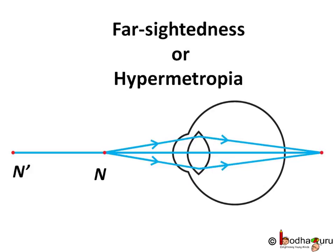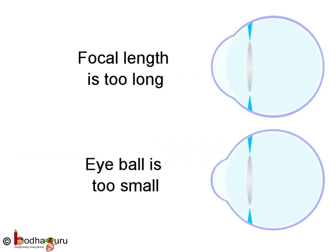Thus, in case of hypermetropia, the focal length of lens doesn't reduce enough to create image of nearby object on retina. This defect may be caused because of two reasons. Either the focal length of the eye lens is too long or the eyeball has become too small.